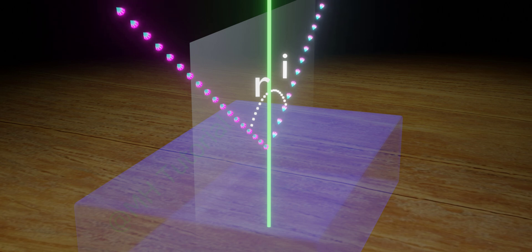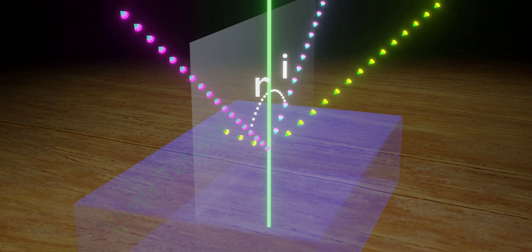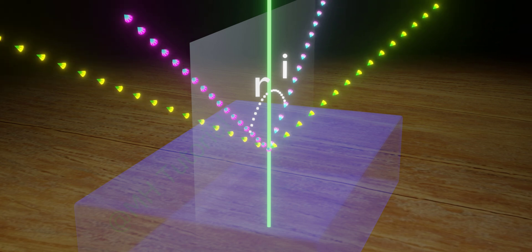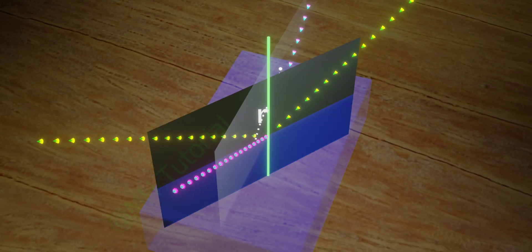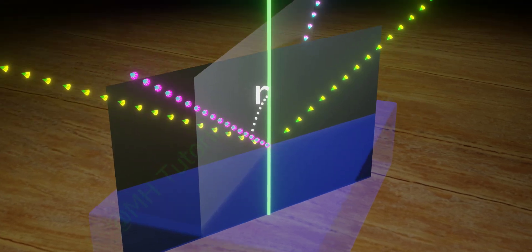Suppose another ray of light travels to that point from a different direction. Then the incident ray, normal, and reflected ray may not lie on the previous plane. They may be placed on another plane.